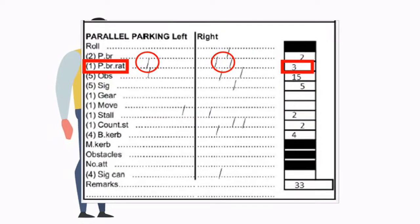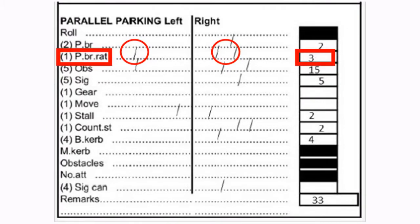Next, the student got three points scored for not using the release mechanism of the parking brake, once to the left and twice to the right. When using the parking brake, you must press in the button when operating the park brake.